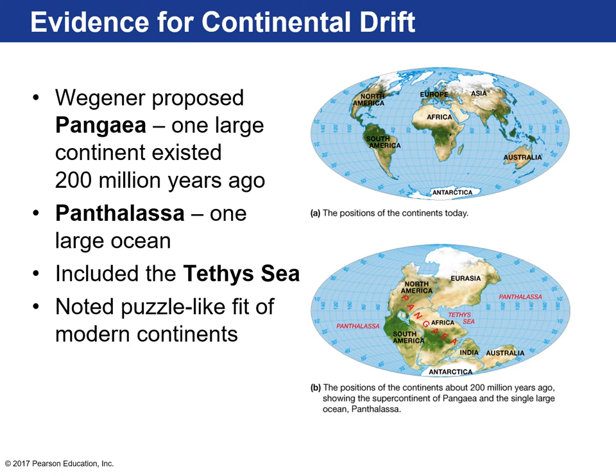So, continental drift — essentially what Alfred Wegener was saying way before his time — he was a German meteorologist, not even a geologist. He proposed that in Earth's past, there once existed one large continent called Pangea. It existed about 200 million years ago.